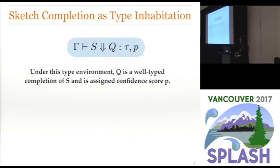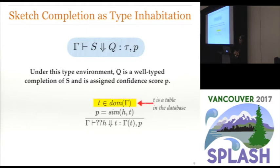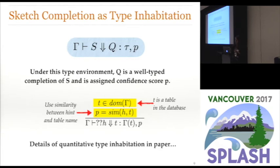Our type inhabitation rules correspond to rules of this shape: given some type environment gamma, we say that sketch S instantiates to a well-typed query Q, and we associate a confidence score with the actual query. To give a simple example, consider a query sketch with a single unknown table that has hint H attached to it. According to the rule, we can instantiate this hole with table T if T is a table in the database, and we assign a score based on the similarity between the natural language hint and the name of the database table. The other rules get significantly more complicated — details are in the paper.